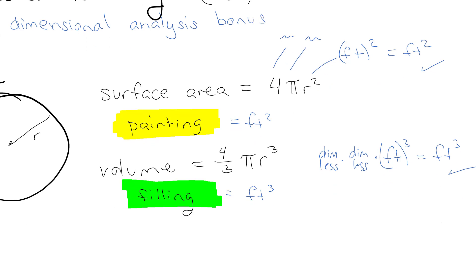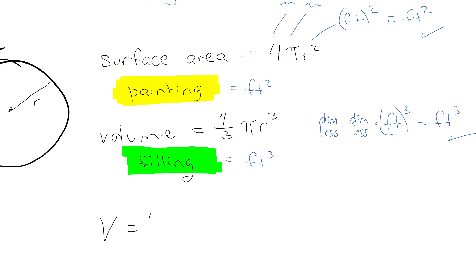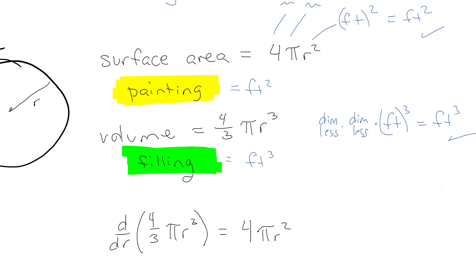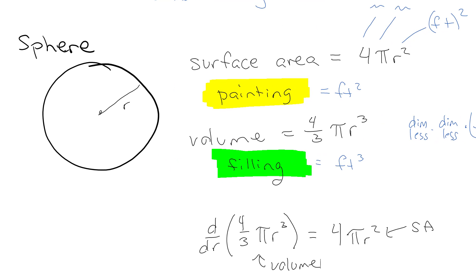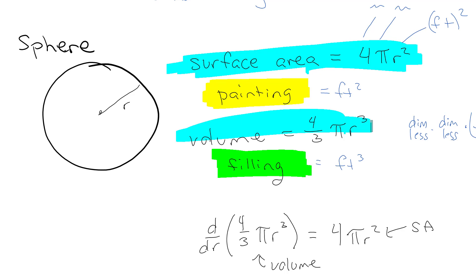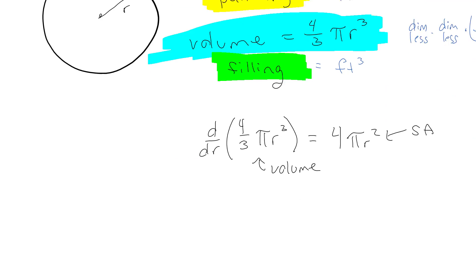Now, if you happen to be a calculus-minded person: I can always remember four-thirds πr³, but I can never remember 4πr². What I do know is that if I take the derivative with respect to r of four-thirds πr³, I get 4πr², which is the surface area. So if I take the d/dr of the volume of a sphere, I get the surface area of the sphere. I don't think that works for other shapes in the same way, but it helps me remember it for the sphere. So: surface area is 4πr², and volume is four-thirds πr³.